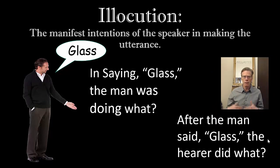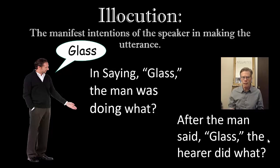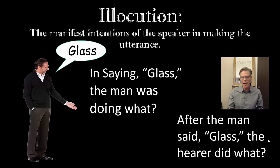On the other hand, we could also look at the effect — the perlocution. So after the man said 'glass,' the hearer did what? In that first case, where it's a warning, the barefoot person probably went around the glass. In the reprimand case, where the children neglected to clean up a glass, they presumably picked up the glass and put it in the sink. In the classroom example, the students presumably learned. In the example of a request to be handed a glass, the hearer handed the glass over. And in the case of the complaining, maybe the person being complained to simply commiserated. In each one of those cases, those would be the perlocutions.